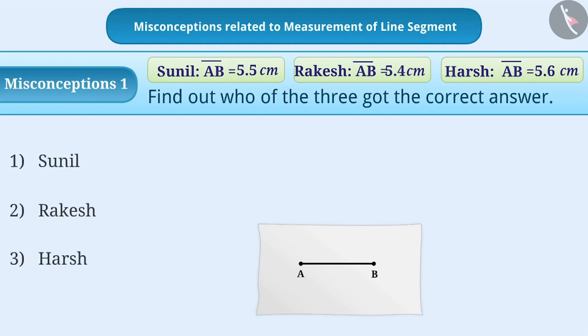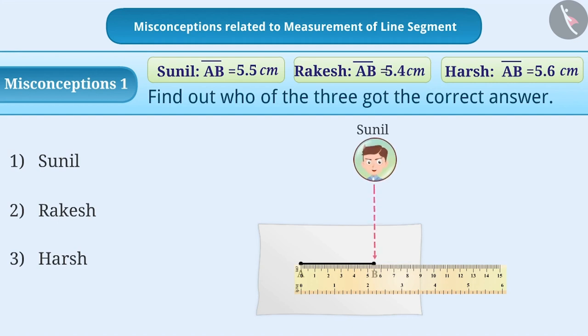Whenever we need to find the length of a line segment, we place the ruler correctly and carry out the measurement. While measuring, it is necessary that the eye should be exactly above the symbol. To measure the length here, Sunil looked from above the mark. Therefore, he got the correct length as 5.5 cm.